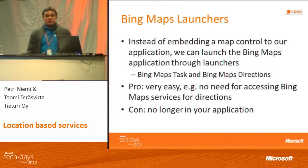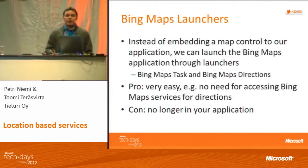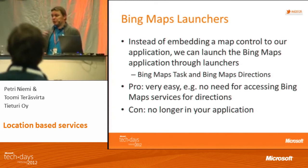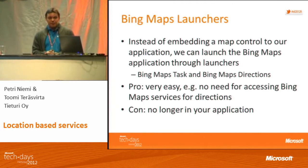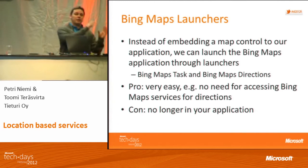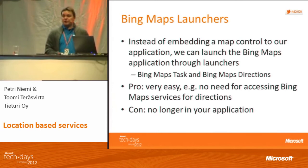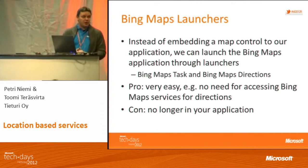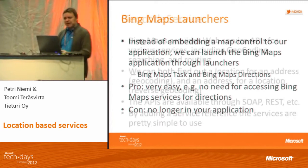Bing Map launchers — that's even more simple. If you've done any launchers, you know how to do this. We have directions and Bing Maps tasks that basically launch the maps application, which either shows your current location or shows you the route. The problem is you're no longer in your application. If you don't care, use that — instead of having to come up with a map control and finding a route yourself, just launch the maps application and it shows you with the native platform-specific maps application.